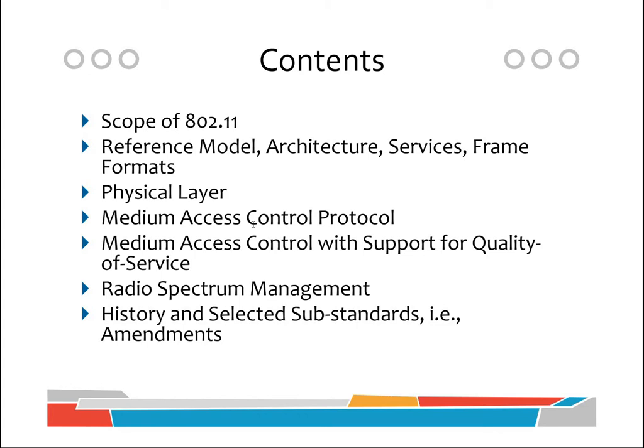This slide is from Chapter 5 of the book 'IEEE 802 Wireless Systems,' a soft copy of which has already been provided. The chapter contents include: scope of 802.11, reference model architecture, services and frame formats, physical layer (which we will skip), medium access control protocol, medium access control for quality of service support, radio spectrum management, and history and selected sub-standards such as 802.11a, 802.11e, 802.11s, etc.